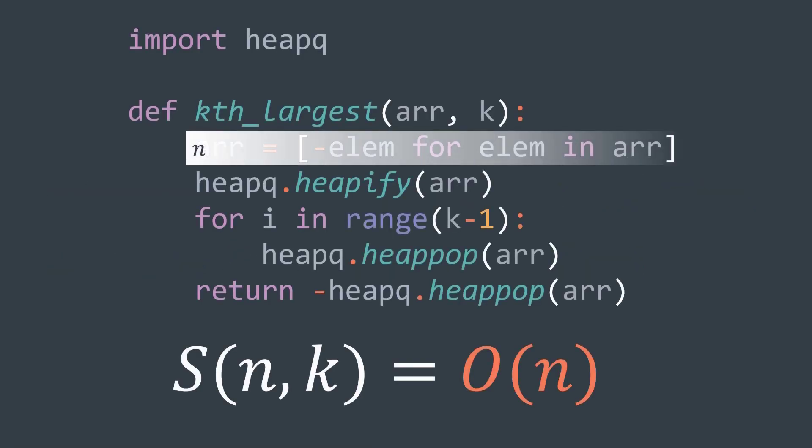And for the space complexity, we have n for the priority queue, we get an O of n space complexity.